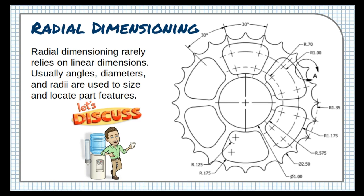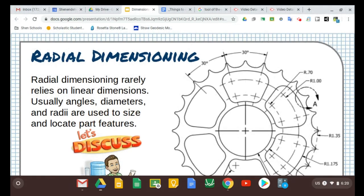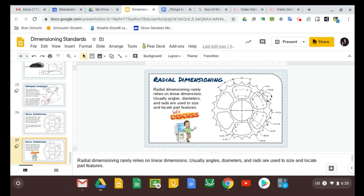Every situation calls for a unique dimensioning style, and sometimes one rule might contradict another. The best thing you can do in a situation like that is to ask yourself, what is clearest? What communicates the best? If you work with that guiding principle in mind, you'll always produce sharp, clear technical drawings.